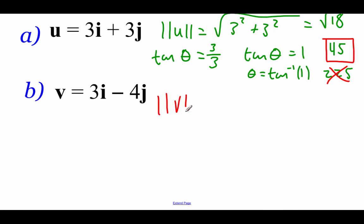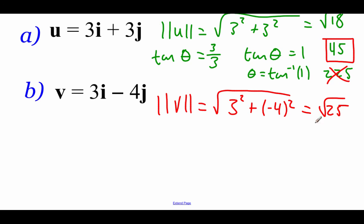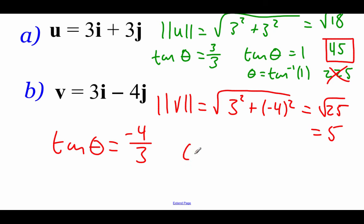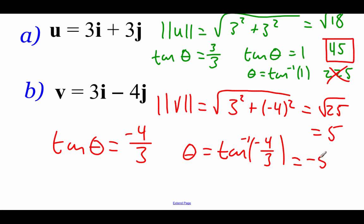For vector v, let's find the magnitude first. The magnitude of v equals the square root of a squared plus b squared, giving us 9 plus 16, which is 25, so the square root is 5. For the direction angle, tangent of theta equals b over a, so theta equals inverse tangent of negative 4 thirds. This doesn't appear on the unit circle, so we plug it into the calculator and get negative 53.1 degrees. Since we have a positive x value and a negative y value, the angle is in the fourth quadrant. Adding 360 degrees gives us the positive angle 306.9 degrees.